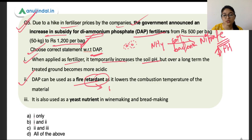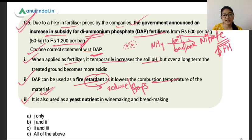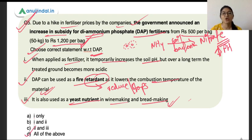The second statement says DAP can be used as a fire retardant — substances that reduce or stop the spread of fires. DAP lowers the combustion temperature of materials. It is used in forest fires — it stops the spread of fire, and after the fire, it also acts as a nutrient for plant growth. The third statement says it is also used as a yeast nutrient in wine making and bread making — this is also correct, as DAP is used to sustain the fermentation process. All statements are correct and the correct option is D — all of the above.